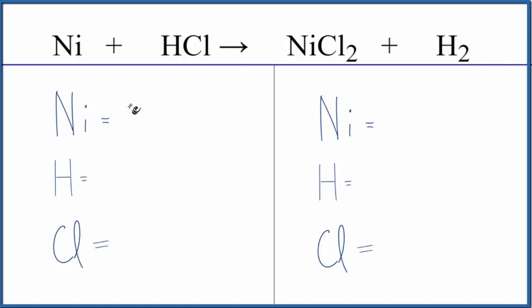We have one nickel atom, one hydrogen, and then just one chlorine. On the product side, we have the one nickel, two hydrogens, and then the two chlorine atoms.